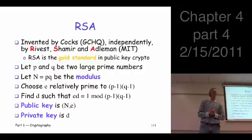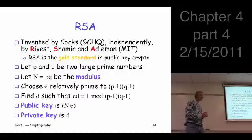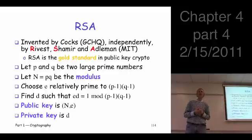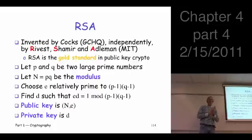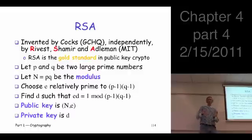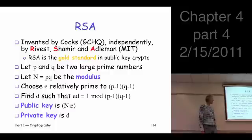Relatively prime means the two numbers have no factors in common — not that the numbers themselves are prime. Once we have e, we need to find d such that e × d ≡ 1 mod (p−1)(q−1), making d the multiplicative inverse of e mod (p−1)(q−1). It's also easy to find d using the extended Euclidean algorithm.